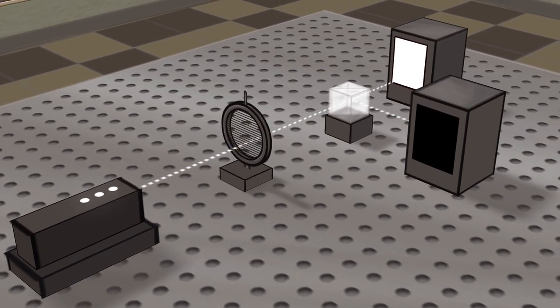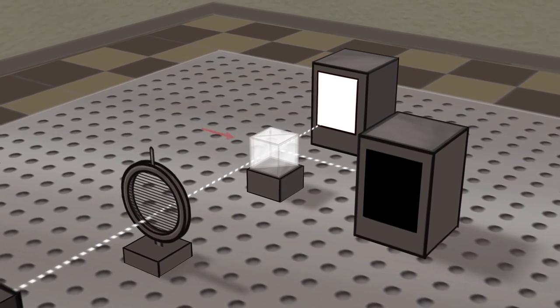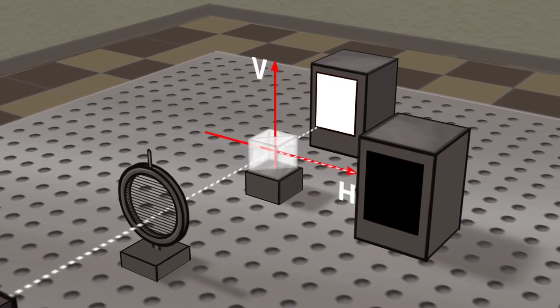If the incident photon is polarized along the vertical axis, there is a 100% probability that it will be transmitted and that it will encounter the white detector.